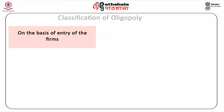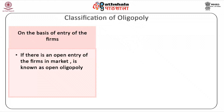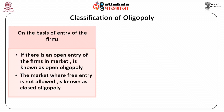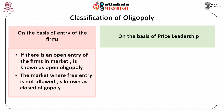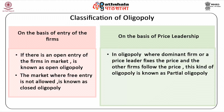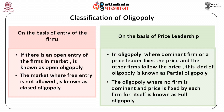Third, on the basis of entry of the firms: if there is open entry of firms in the market, it is known as open oligopoly, and the market where free entry is not allowed is known as closed oligopoly. Fourth, on the basis of price leadership: in oligopoly where a dominant firm or price leader fixes the price and other firms follow, this is known as partial oligopoly. And the oligopoly where no firm is dominant and price is fixed by each firm for itself is known as full oligopoly.